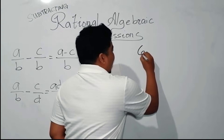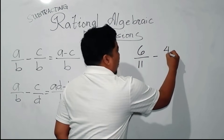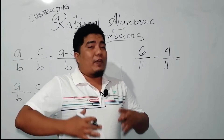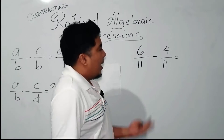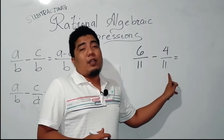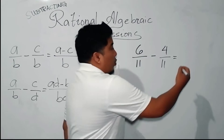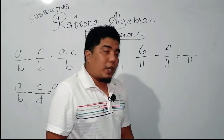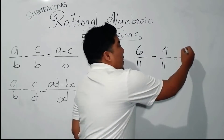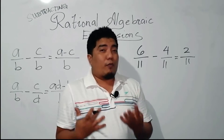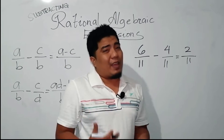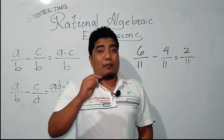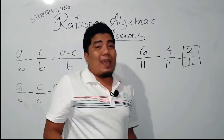What if you have 6 over 11 minus 4 over 11? This is for you to have a strong foundation about subtraction. In this first example, we have the same denominator, so what you do is copy the denominator and then subtract immediately the numerator. So, 6 minus 4 is 2, and you have 2 over 11. The question is, is 2 over 11 in its simplest form? Yes, it is already in its simplest form. Therefore, that will be your final answer.